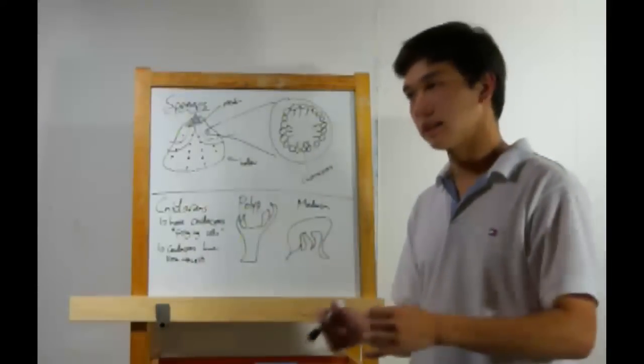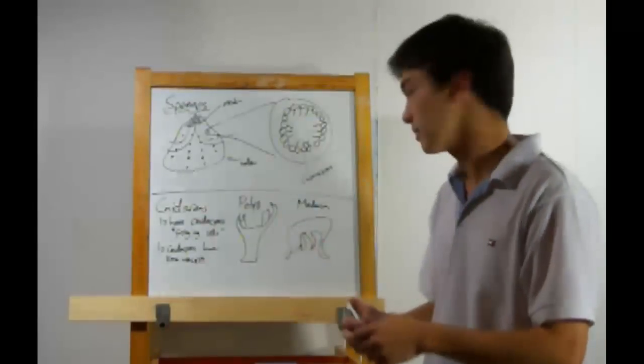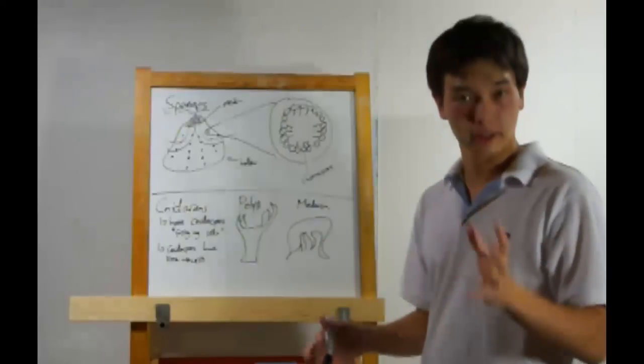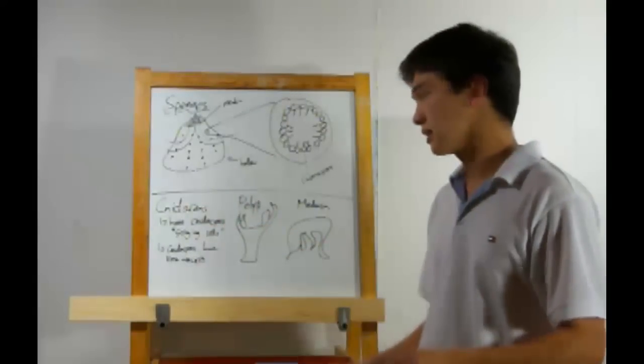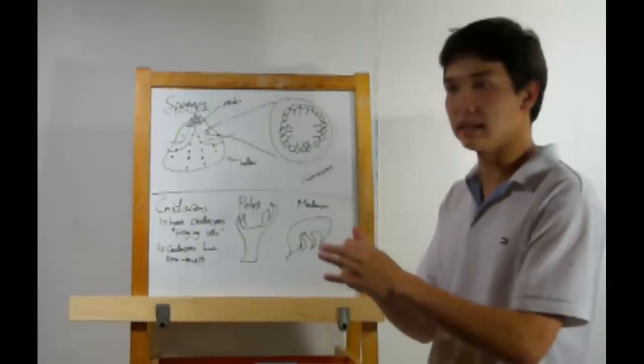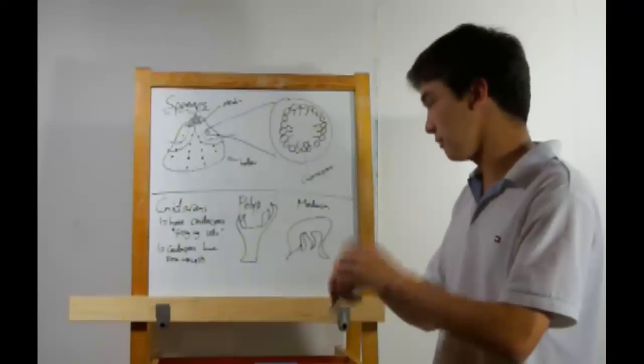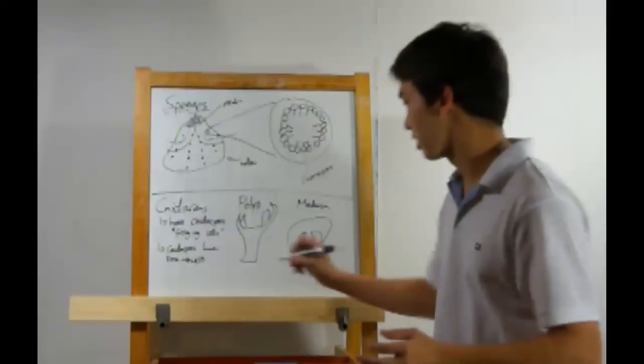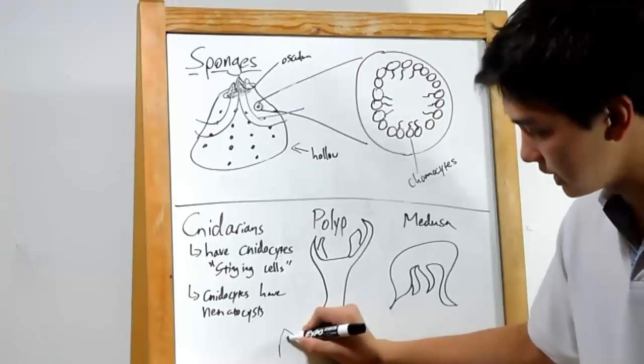Let's move on to cnidarians. Cnidarians, they belong to the phylum Cnidaria. They're known for these things, I'm going to throw this word at you, cnidocytes, stinging cells. They have this specialized structure known as a nematocyst, and if you want to envision a nematocyst, imagine something like a harpoon.